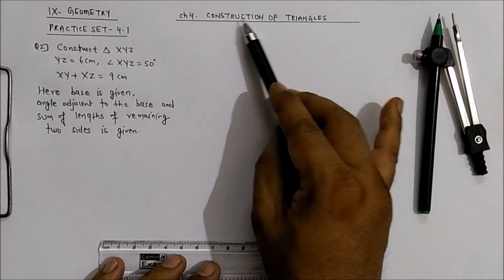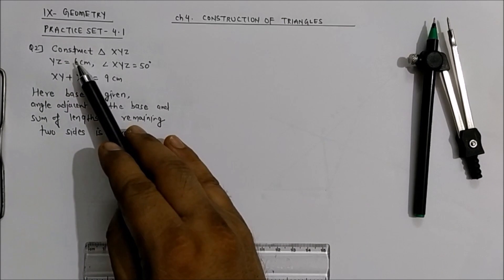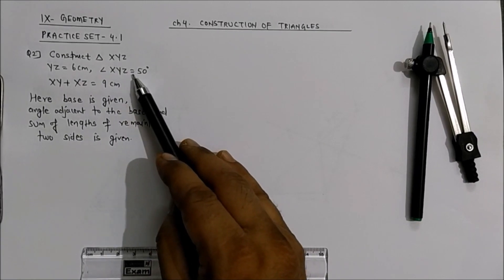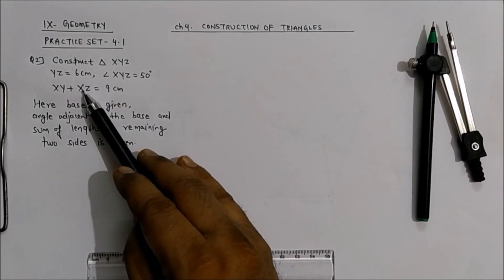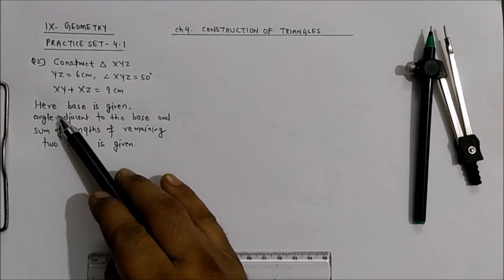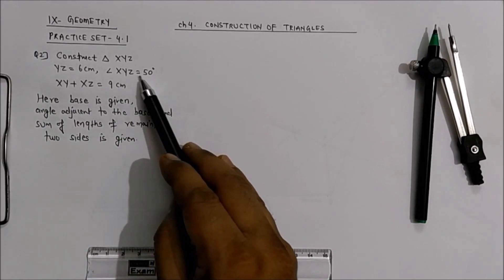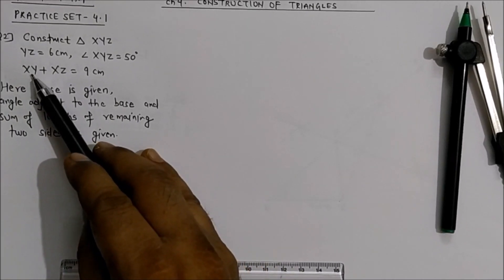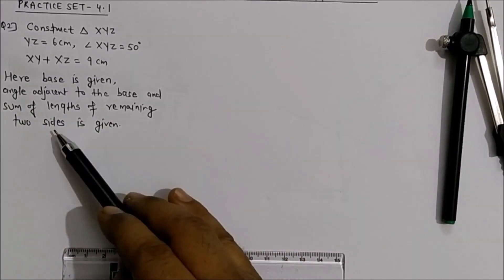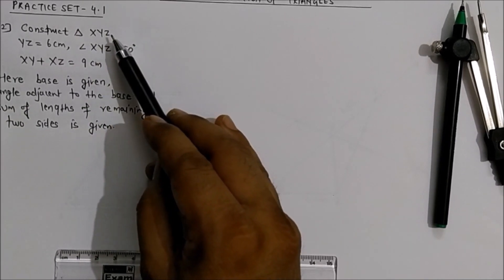Question 2: Construct triangle XYZ where YZ = 6 cm, angle XYZ = 50 degrees, and XY + XZ = 9 cm. The base is given, angle adjacent to the base — angle XYZ = 50 degrees — is given, and the sum of the lengths of the remaining two sides XY + XZ = 9 cm is given. With this information we have to construct triangle XYZ.